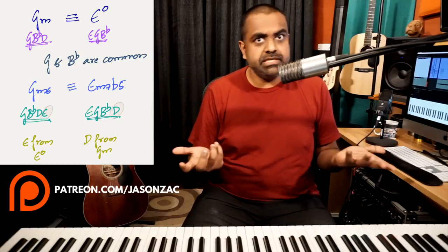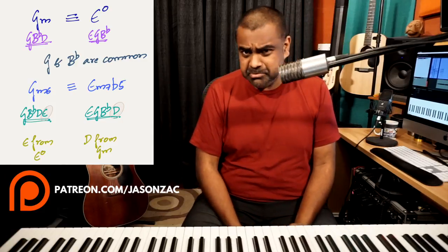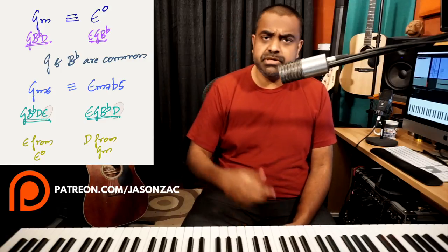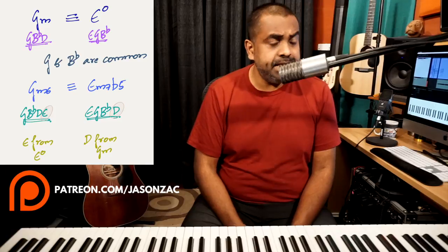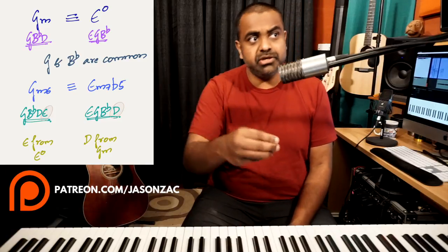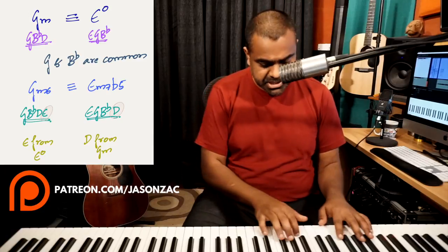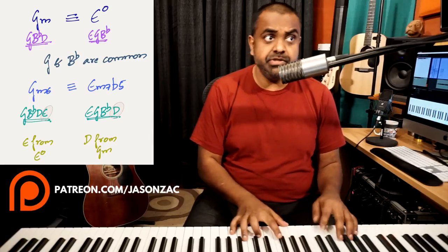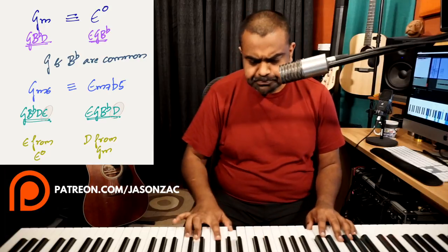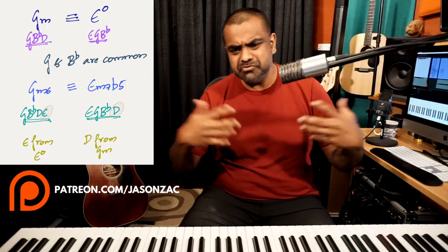So what have we said so far? We have the G minor chord, you can also play the E diminished chord — they both serve the same predominant function. Then that can resolve to the dominant, which resolves to the tonic. We colored up both those chords by adding the remaining note that each chord did not have in common with the other. For E diminished we added the D; for G minor we added the E. It creates a more sophisticated sound.